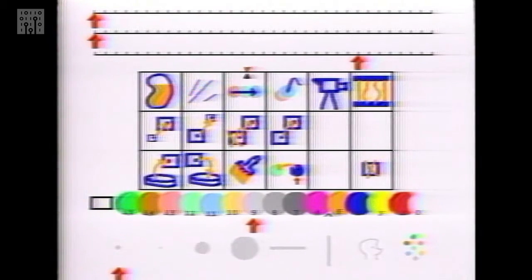And then he chooses the cycle color icon, which makes that set of colors cycle. And he can control the speed and the direction of the cycling from the tablet using the stylus.